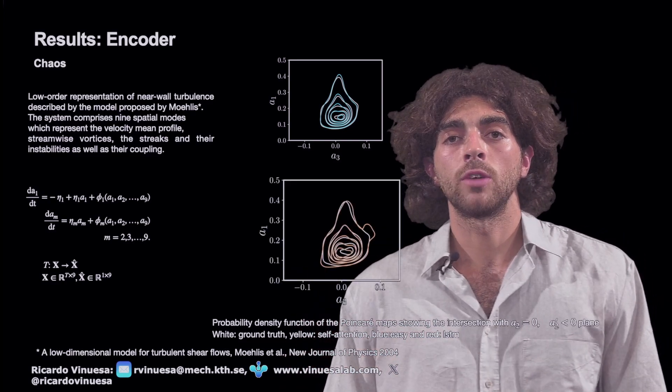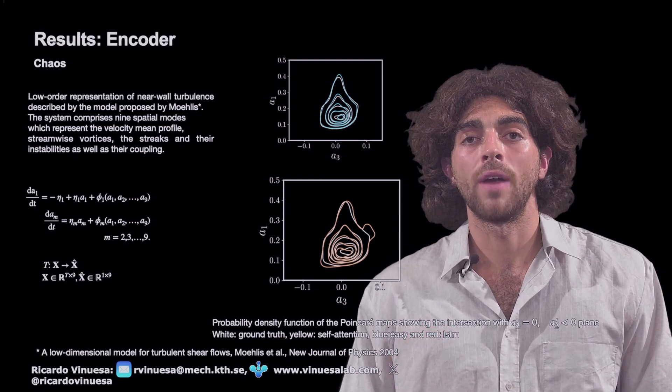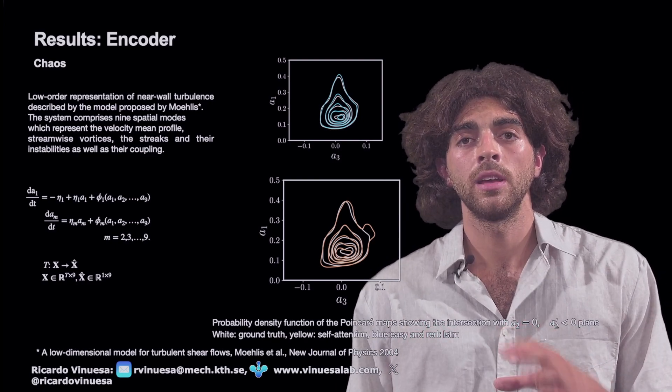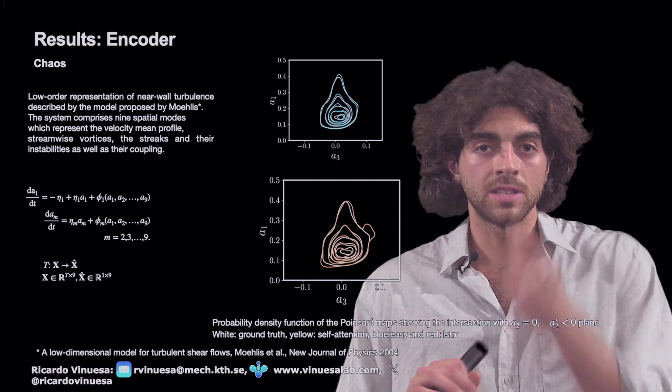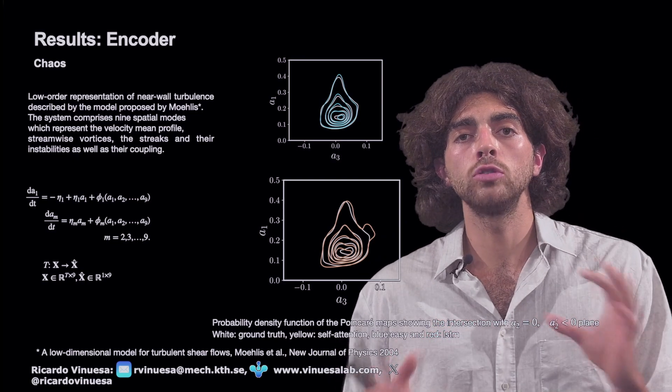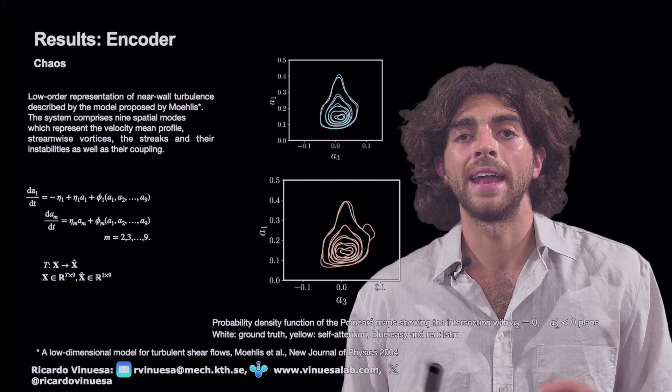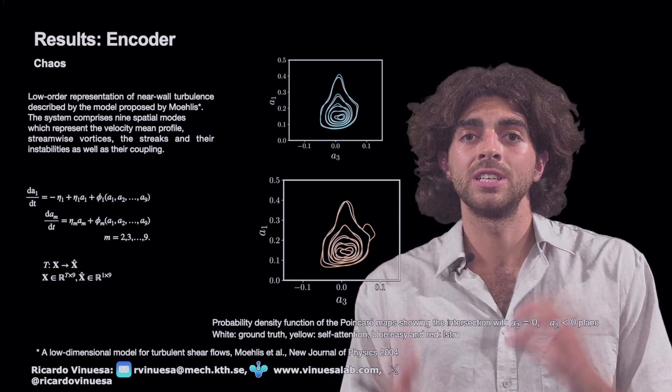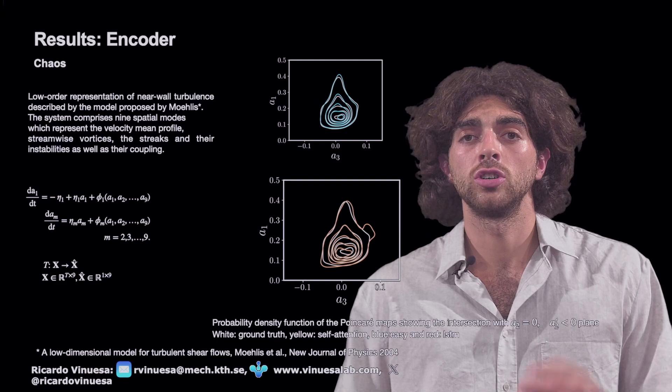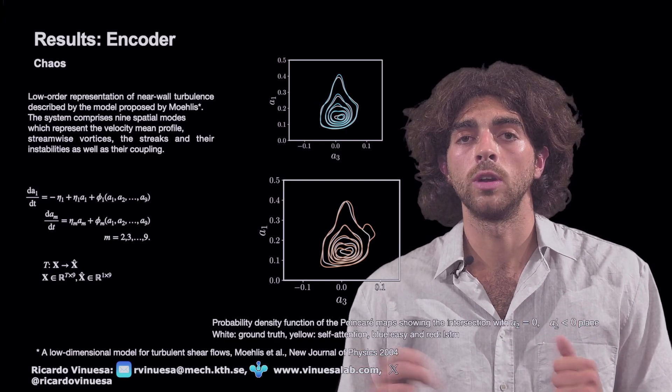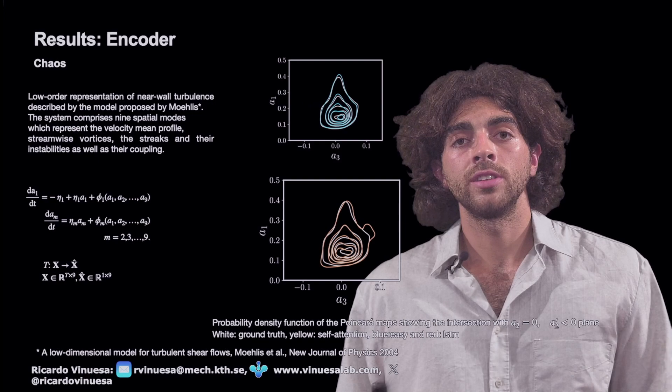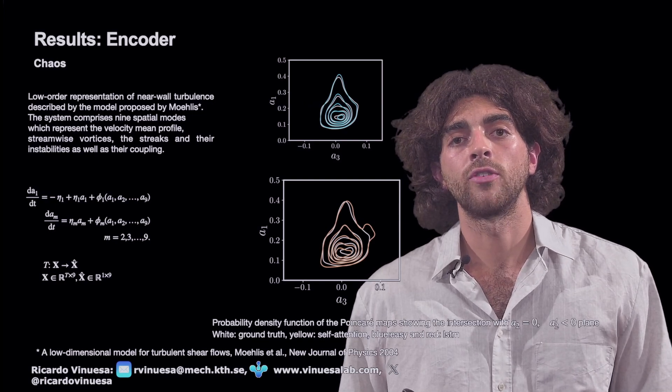The Poincaré map is a reduction of the original system by one dimension. So we end up with an eight-dimensional system. In particular, we take the contour map of the variables a1 and a3, after performing an average. This is the probability density function of the Poincaré section of a2 equal to 2, with derivative less than 0. It is clear that East Attention is outperforming the self-attention.